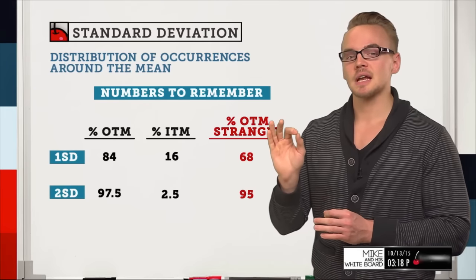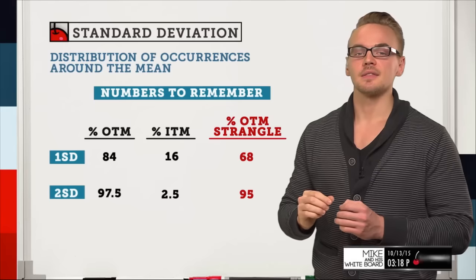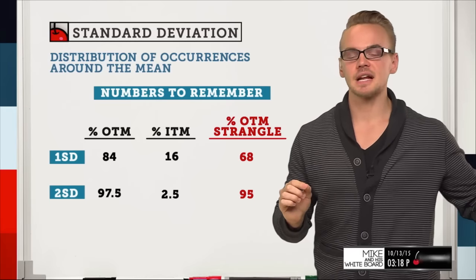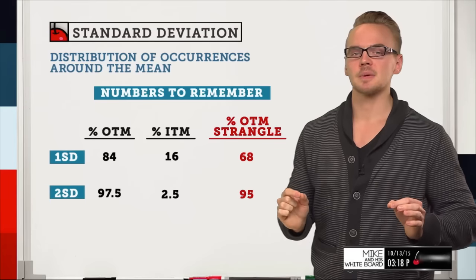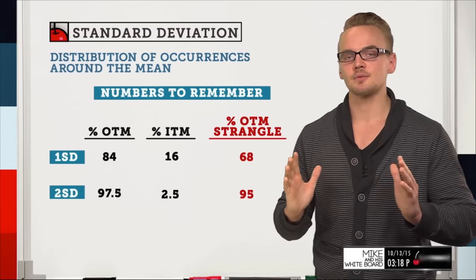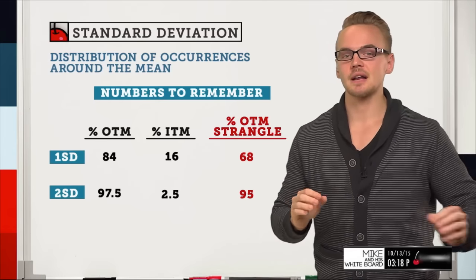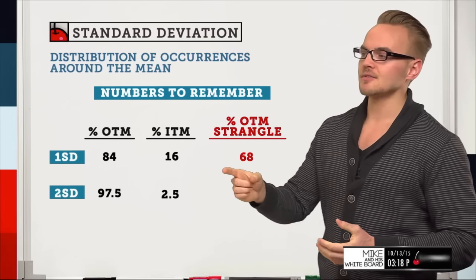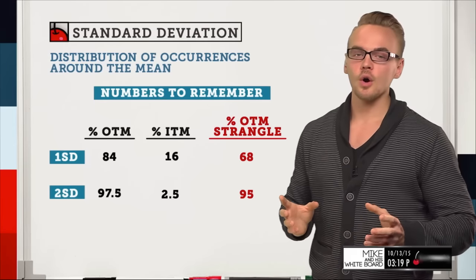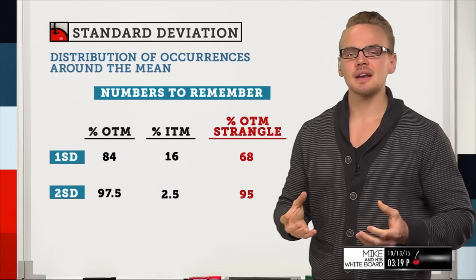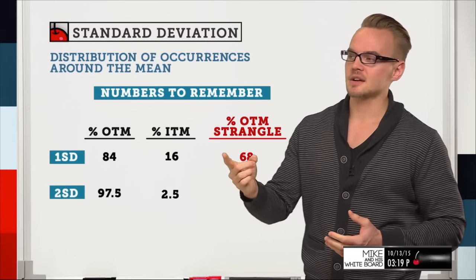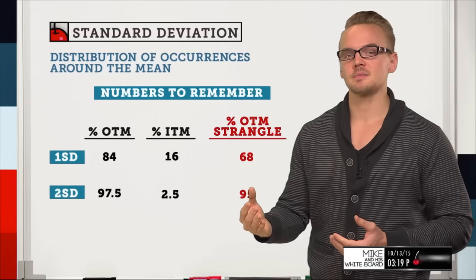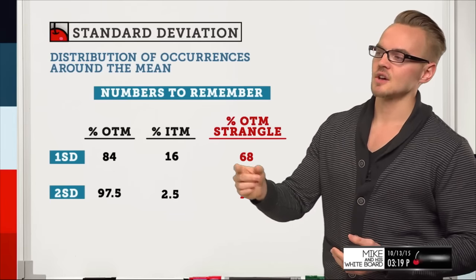There's a big difference between the probability of being in the money for one option versus two. For one option, you can be correct if the stock price goes anywhere on the other side of the spectrum. But with two options you've created a range, so you need to combine those in-the-money probabilities. For a one standard deviation single option, look for 84% probability of being out of the money, or 16% probability of being in the money. Both always add up to 100%, so whichever you prefer to use is fine.